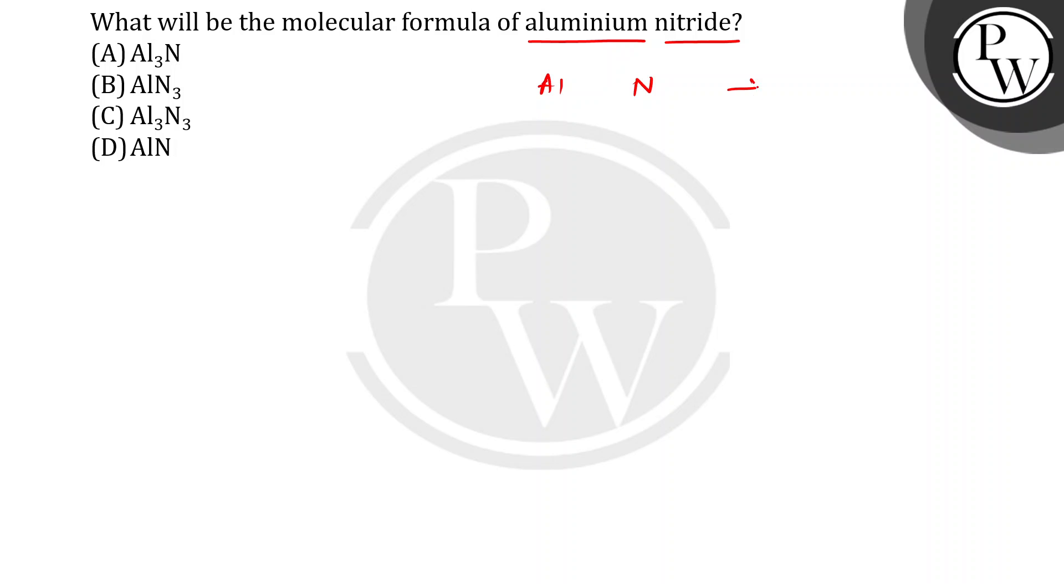Jo nitride hai na, ye basically this particular anion hota hai, N3 minus, yahni iska charge me kya hota hai, negative 3 charge hota hai. So iska valency hona hai 3.